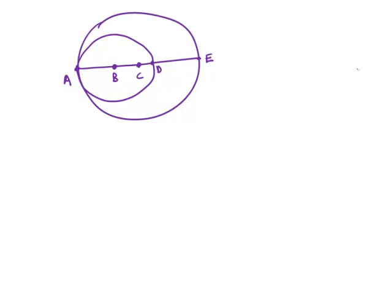In the figure, points A, B, C, D, and E lie on a line. A is on both circles, B is the center of the smaller circle, C is the center of the larger circle, D is on the smaller circle, and E is on the larger circle.